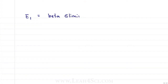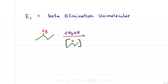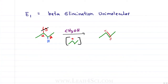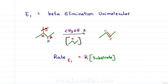E1 stands for beta elimination unimolecular and may look very similar to SN1 because the two reactions are always in competition — except that in this reaction we remove the leaving group and a nearby beta hydrogen to give us a pi bond between the alpha and beta carbon. Heat is often added to elimination reactions because heat favors the formation of a pi bond. This is a slow reaction with a carbocation intermediate — the more substituted the carbocation, the faster the reaction — and the rate for E1 equals k times the substrate.